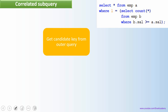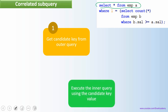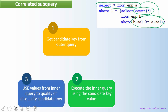It starts with one row from the outer query. Suppose the outer query returns 10 records — it takes one record at a time. For every one record, it executes the inner query. So it starts with the outer query, takes the first record, then goes to the inner query and executes it for that condition. In the second step, the inner query gets executed and computes the result. In the third step, the inner query's result is evaluated against the condition.